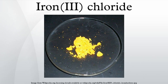Iron chloride, also called ferric chloride, is an industrial-scale commodity chemical compound with the formula FeCl3. The color of iron chloride crystals depends on the viewing angle: by reflected light the crystals appear dark green, but by transmitted light they appear purple-red.